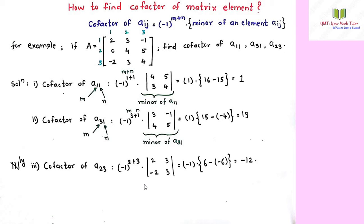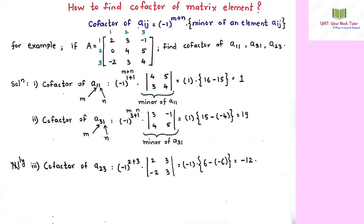Let us discuss how to find the cofactor of a matrix element. The cofactor of an element a_ij is equal to minus 1 to the power m plus n, multiplied by the minor of the element a_ij. This is the definition, and we will understand it by taking one example.